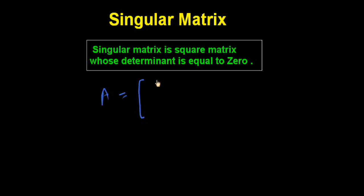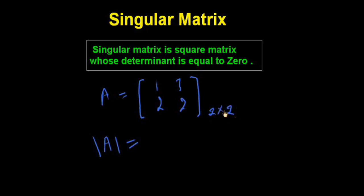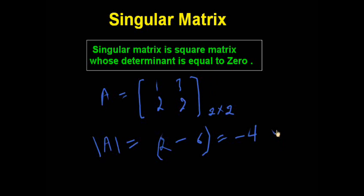Suppose matrix A is equal to [[1, 2], [3, 2]]. This is a square matrix with two rows and two columns. Its determinant is 2×1 minus 2×3, which equals negative four. Since the determinant is not equal to zero, this is not a singular matrix.